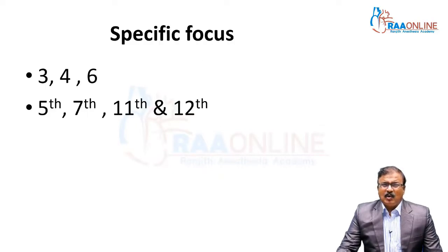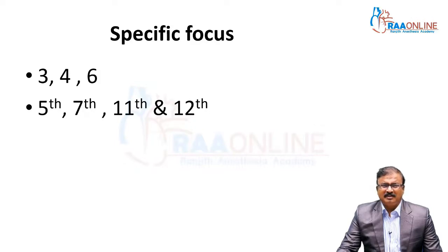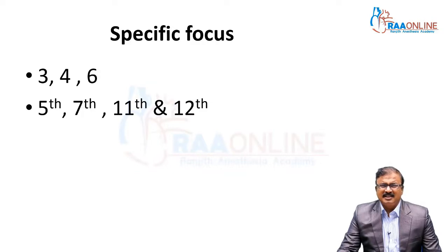In cranial nerves, you should specifically focus on the third nerve, fourth nerve, and sixth nerve, which share a common pathway, then the fifth nerve, seventh nerve, and the eleventh and twelfth nerves, which have specific functions.